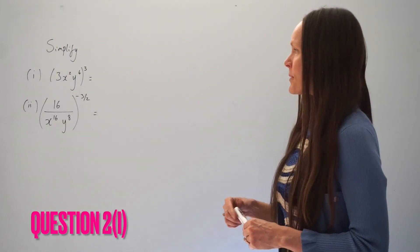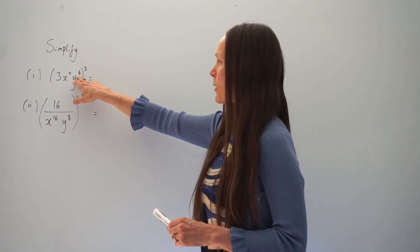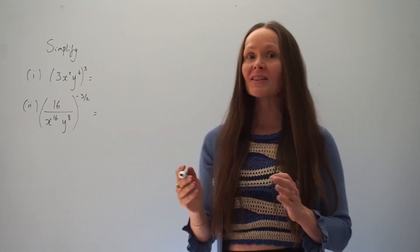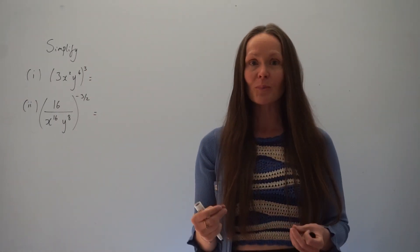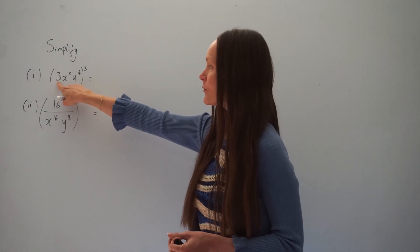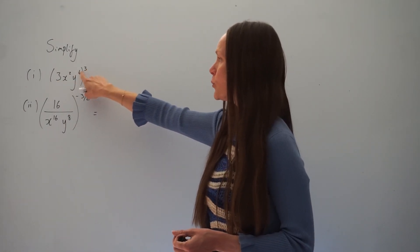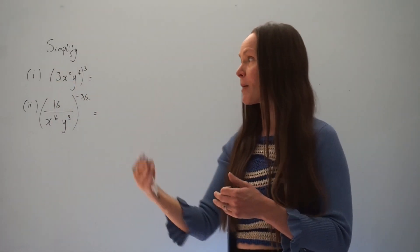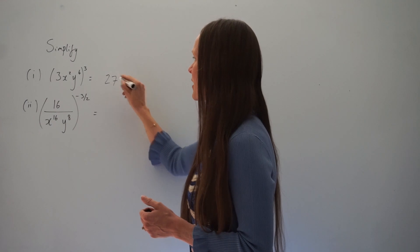In part 1, we have to simplify 3x squared y to the power of 4, all cubed. Remember, when you have brackets with a power outside, you have to multiply the powers together. Let's look at the number 3 at the front — we have to cube this number. So 3 cubed is 3 multiplied by 3 multiplied by 3, which is 27.